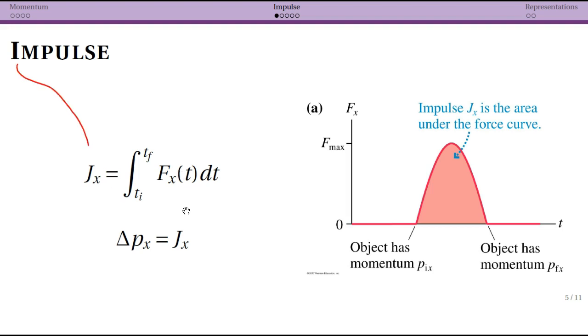Note that impulse is capital J. That's a little confusing. Why is impulse J? I don't know if there's actually a Latin reason for this, but we use I for other things. So capital J, that's your impulse. This is a case where it's important to know what that notation is.